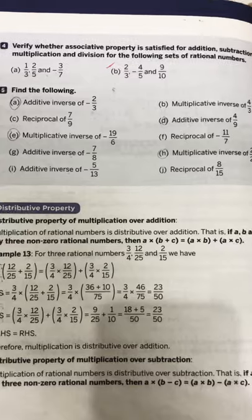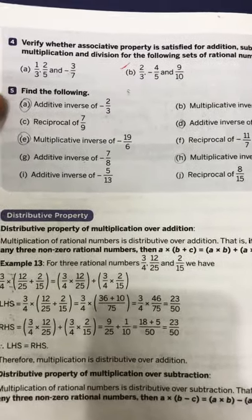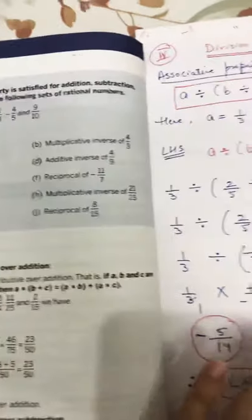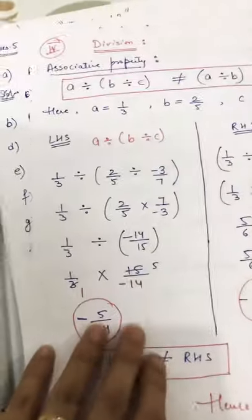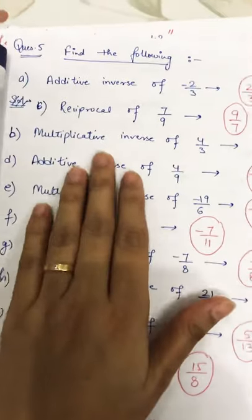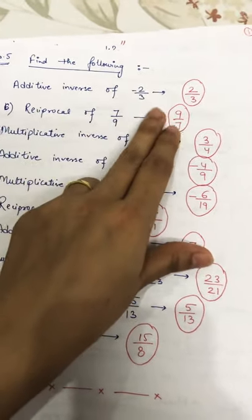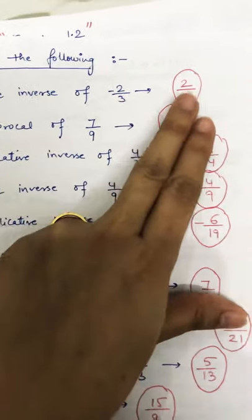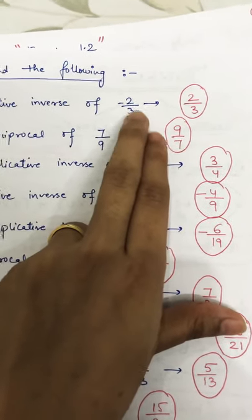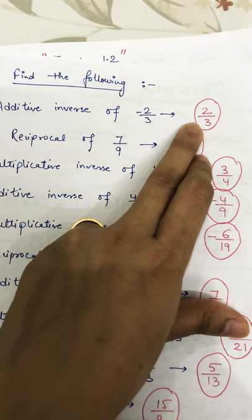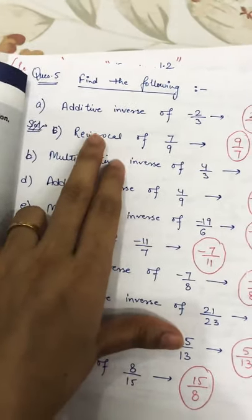Now question number five — it is the last question of exercise 1.2. In this question you have to tell the answers of the following statements. I have written the questions and answers here. Additive inverse of minus 2 by 3: it is very simple — the additive inverse is 2 by 3. You just write the same value but the sign will be opposite. If it is minus, it becomes positive.